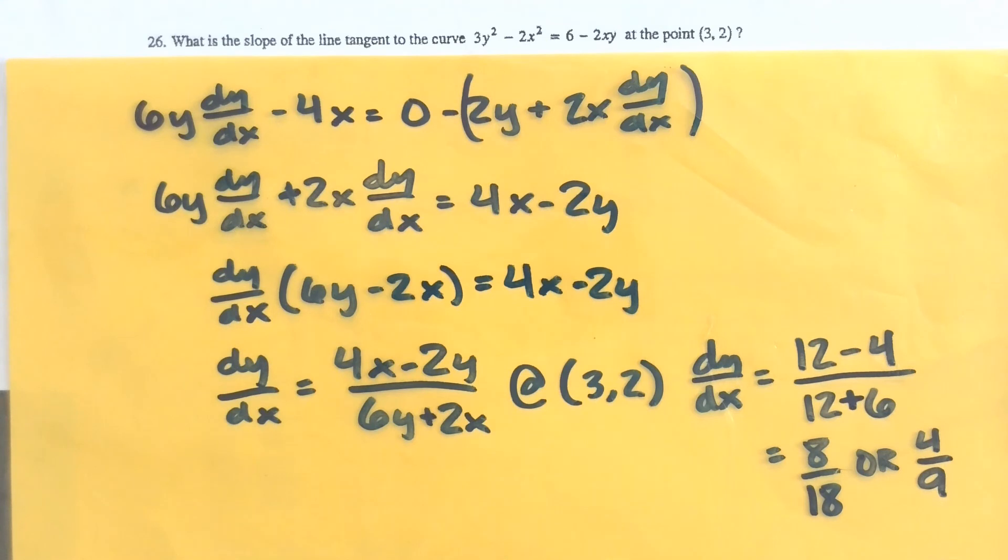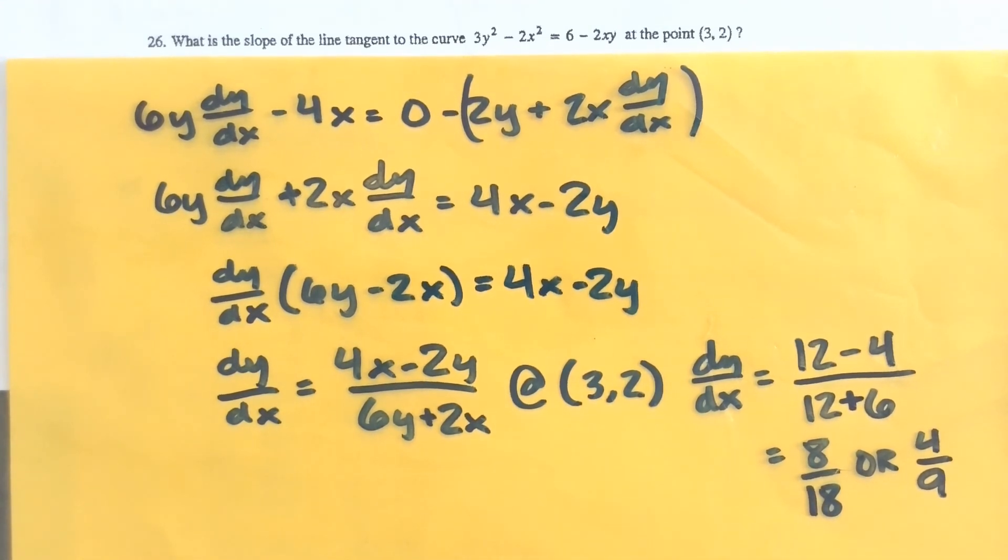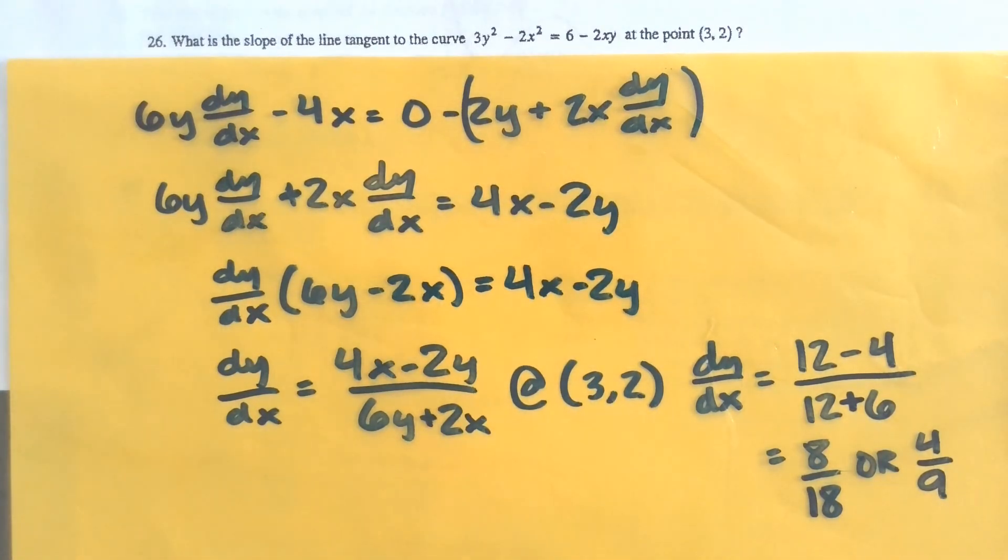So we should get that the slope of the tangent line is 8 over 18, or if you simplified it, it would be 4 over 9. Since we're talking about slope of the tangent line to the curve, our first steps are just finding the derivative. So we do have to use implicit differentiation.